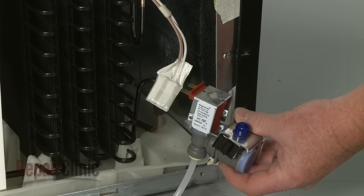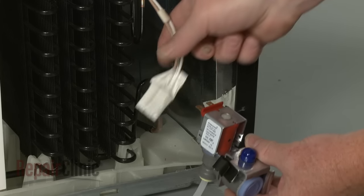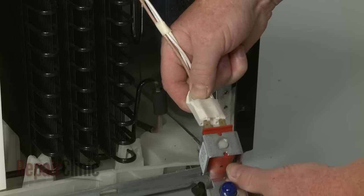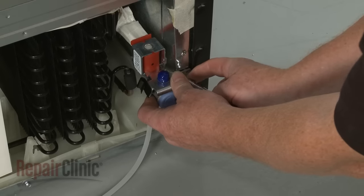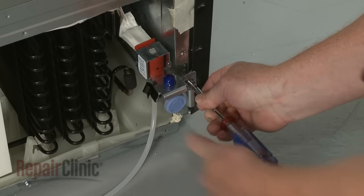Install the water inlet valve by first connecting the wire connector to the solenoid. Now align the valve bracket on the frame, then thread and tighten the two half-inch hex head screws to secure.